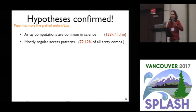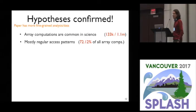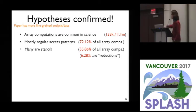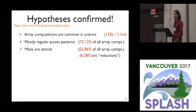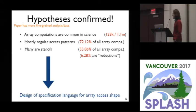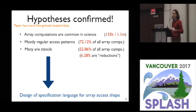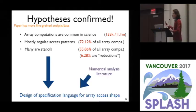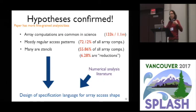The paper has lots more details about the fine-grained empirical study, but our hypotheses were confirmed that these regular access patterns are really common. We also looked at stencils and found that in our corpus, 55% of all array computations were stencils, and roughly 6% corresponded to reductions.